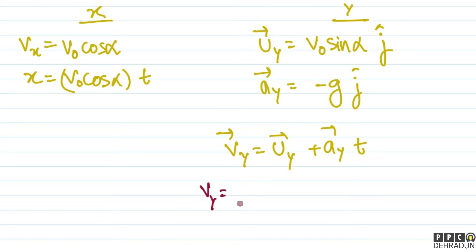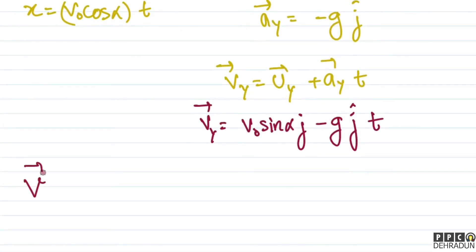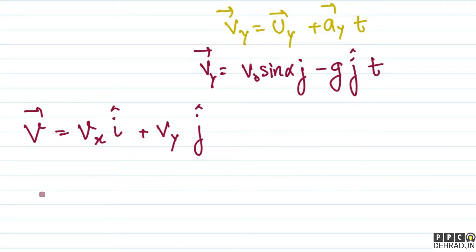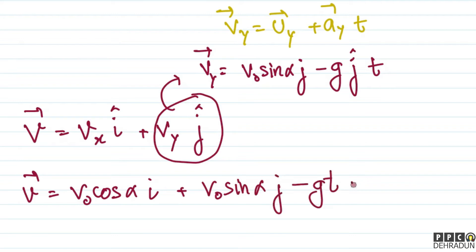So the vy vector comes out to be: uy vector, meaning the initial velocity y-component, which was v₀sinα j-cap, plus minus g j-cap into t. So vy vector = v₀sinα j-cap − gt j-cap. And vx vector = v₀cosα i-cap. So now we have V vector = vx i-cap + vy j-cap, which gives us V vector = v₀cosα i-cap + (v₀sinα − gt) j-cap.